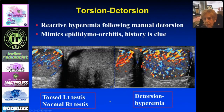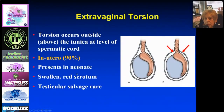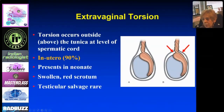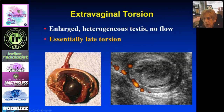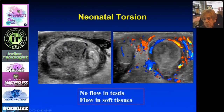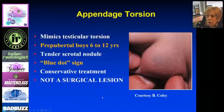Extravaginal torsion is the lesion of the neonate, occurring in utero. Unlike intravaginal torsion where everything twists within the tunica, in the neonate it twists at the lower part of the cord. The findings are the same, but the mechanism differs. It's diagnosed at birth with a swollen, red scrotum; the testis cannot be salvaged as it is already necrotic in utero. On ultrasound, there is flow only in the soft tissues — essentially a late torsion, similar to what we see in adolescents.